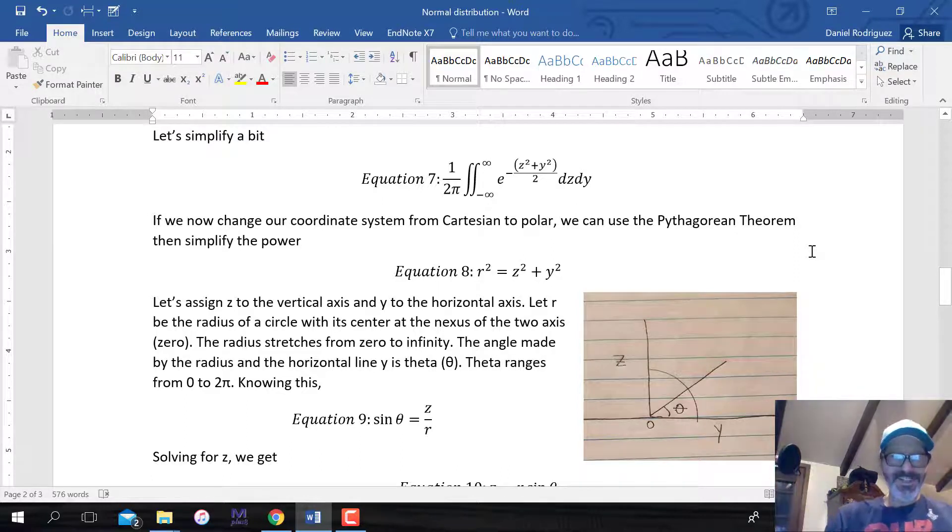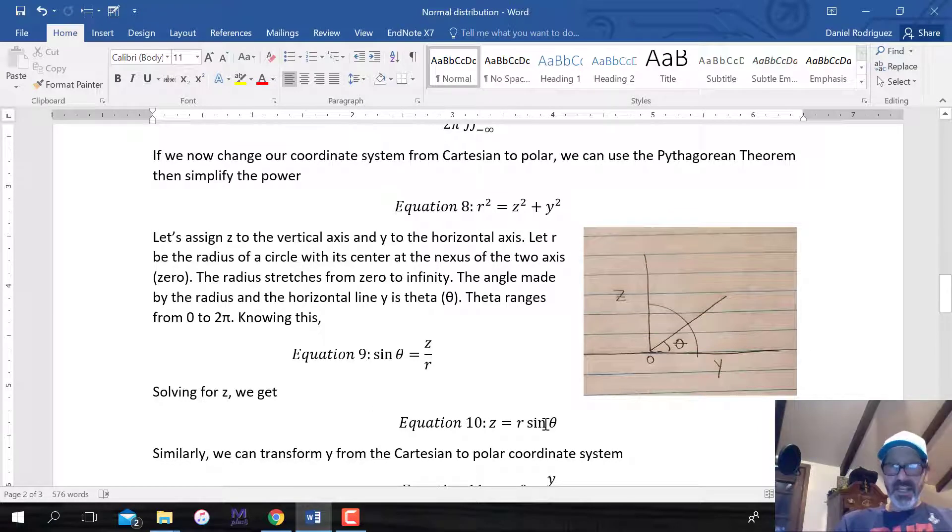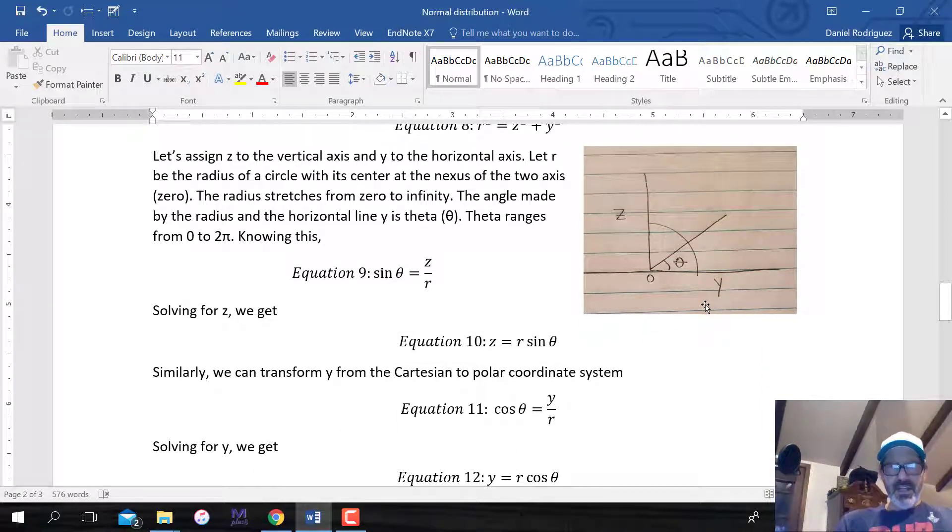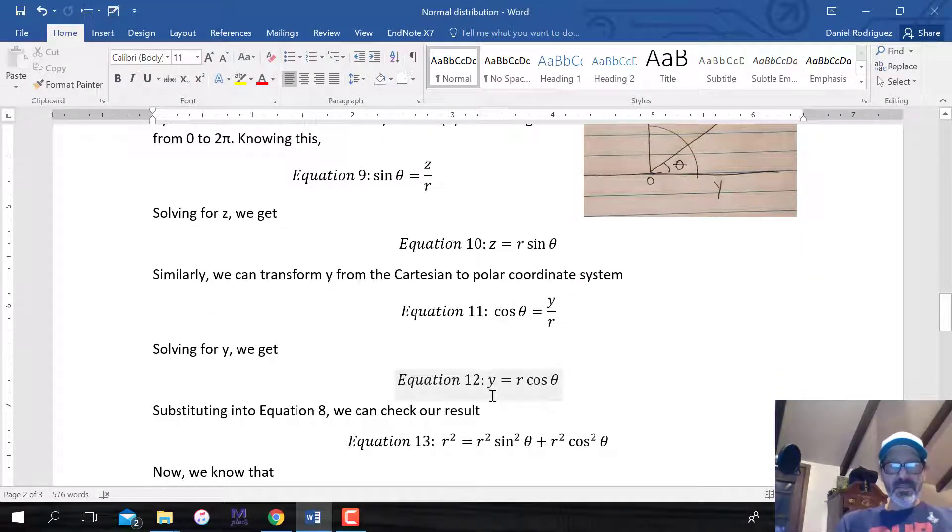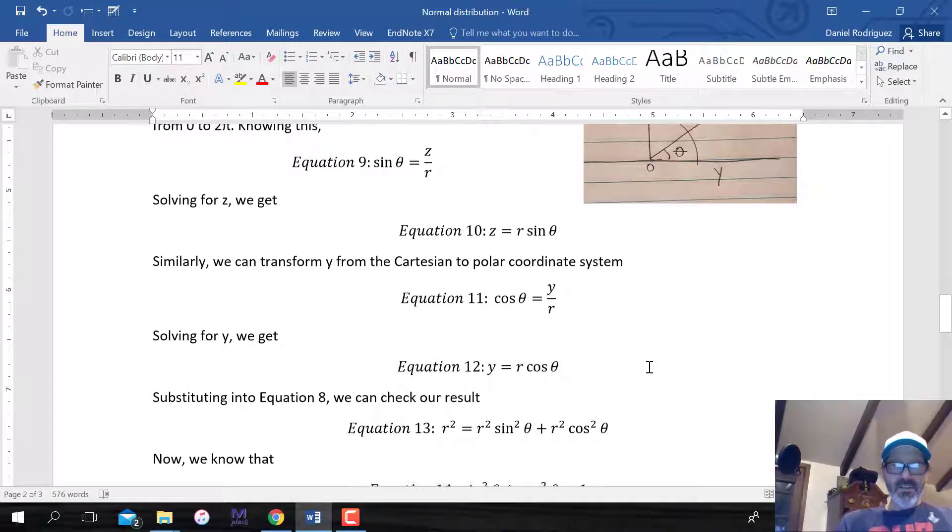Let me show you this figure. If we let z equal the vertical axis and y equal the horizontal axis, this little guy right here is r, the radius. So the radius of a circle. That's why we're going to polar coordinates. The angle made by the radius is theta. We know this theta can range from zero to 2 pi, and we know this radius can range from zero to infinity. We want to get rid of the z and y and put it in terms of these polar coordinate systems.